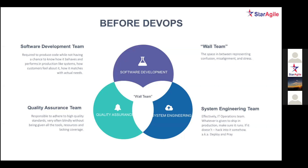Before DevOps, in the early days, we had different development teams, a different quality or testing team, and a separate operations or IT team. All these teams were working in silos — there was hardly any communication between them. That gap between teams is known as the 'wall of confusion.' Patrick Debois sensed that wall of confusion and came up with a solution: why not create a single team that is a blend of technologies?